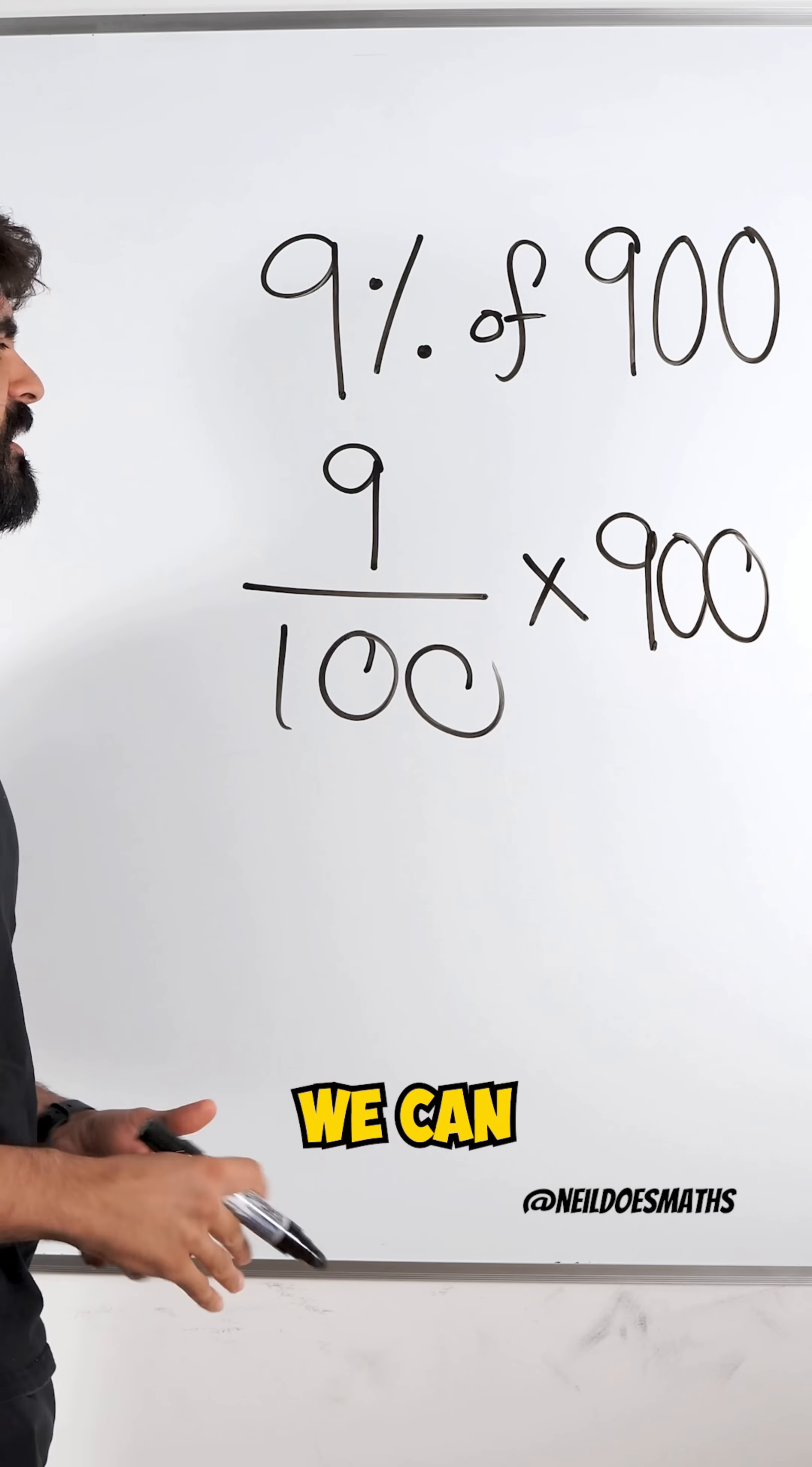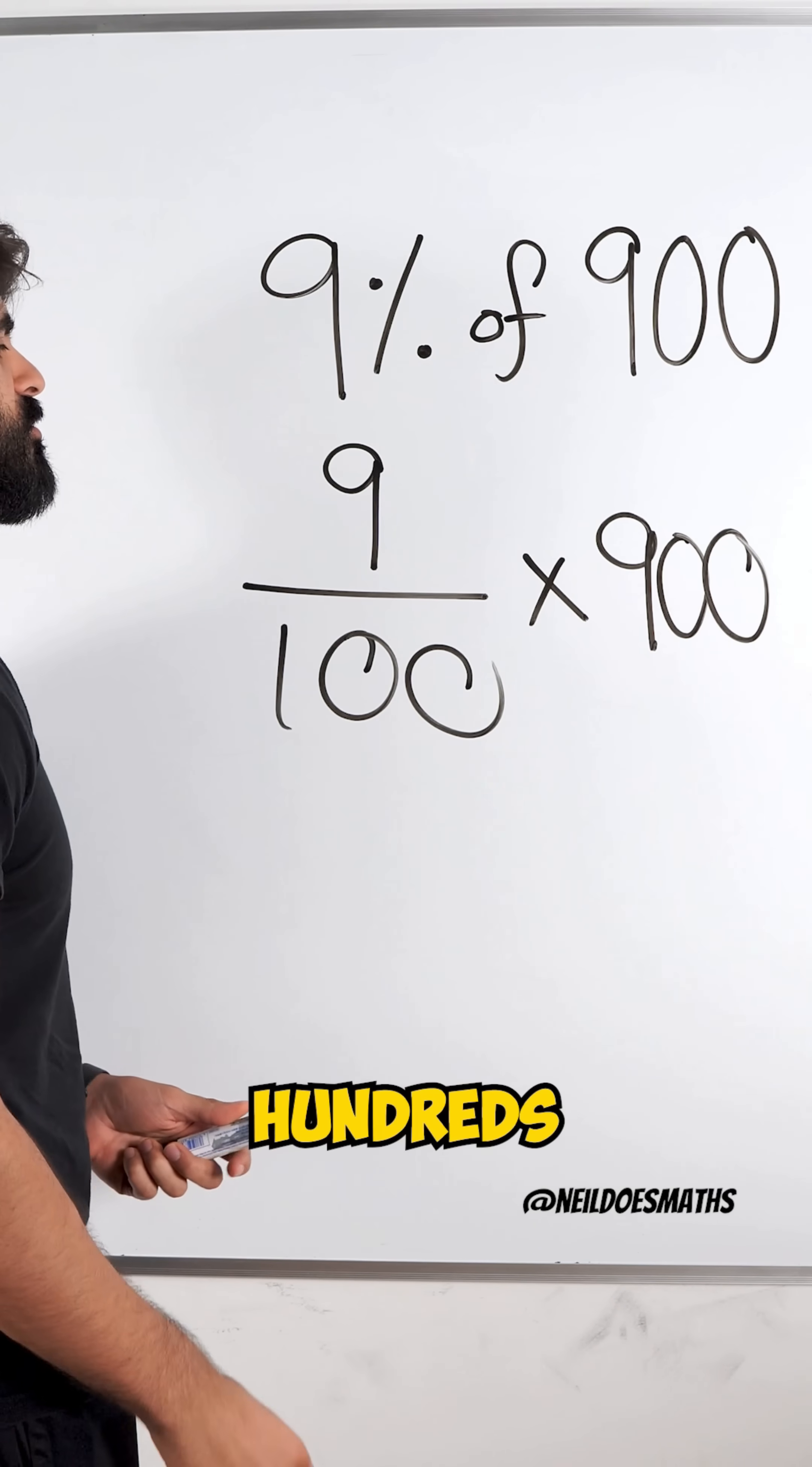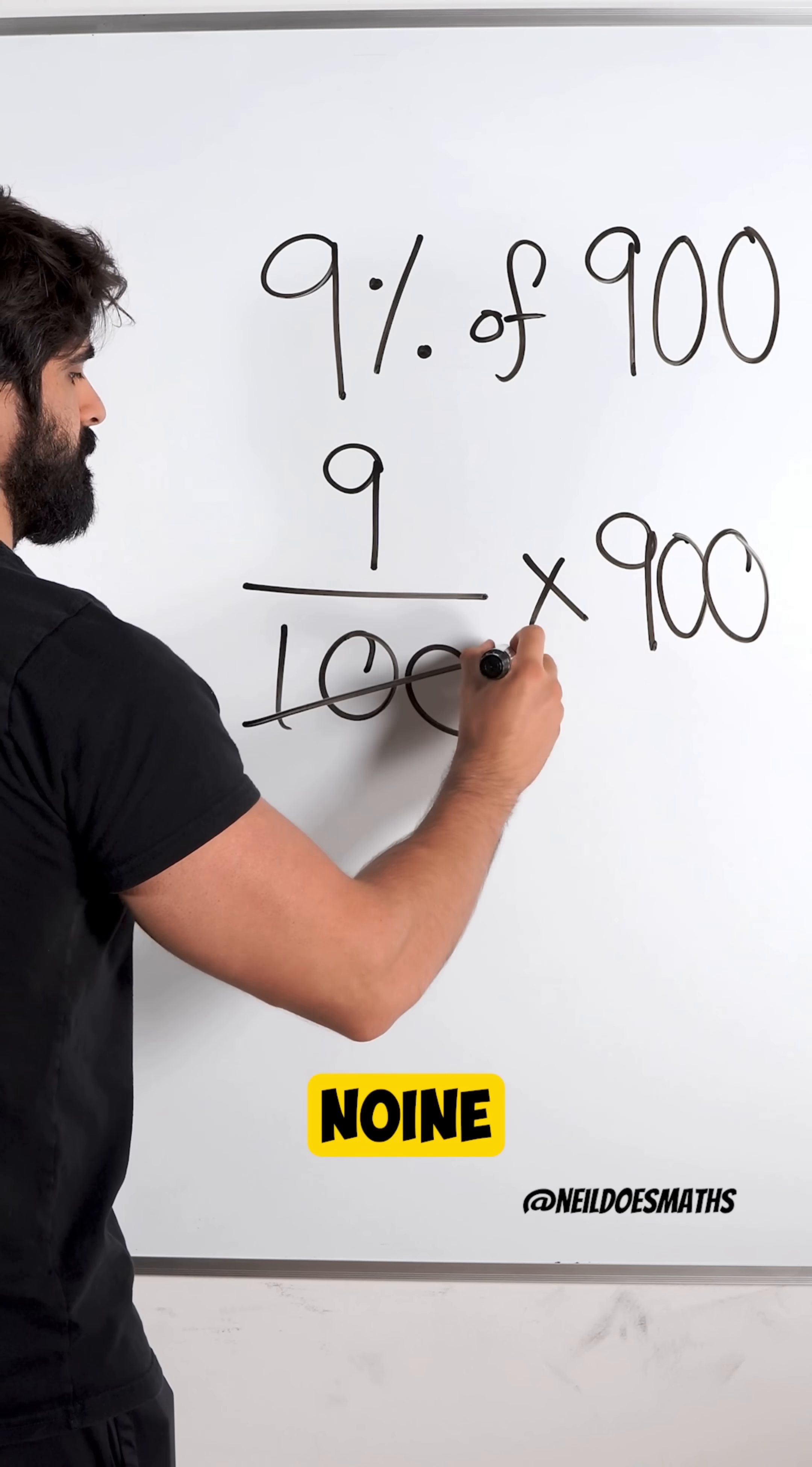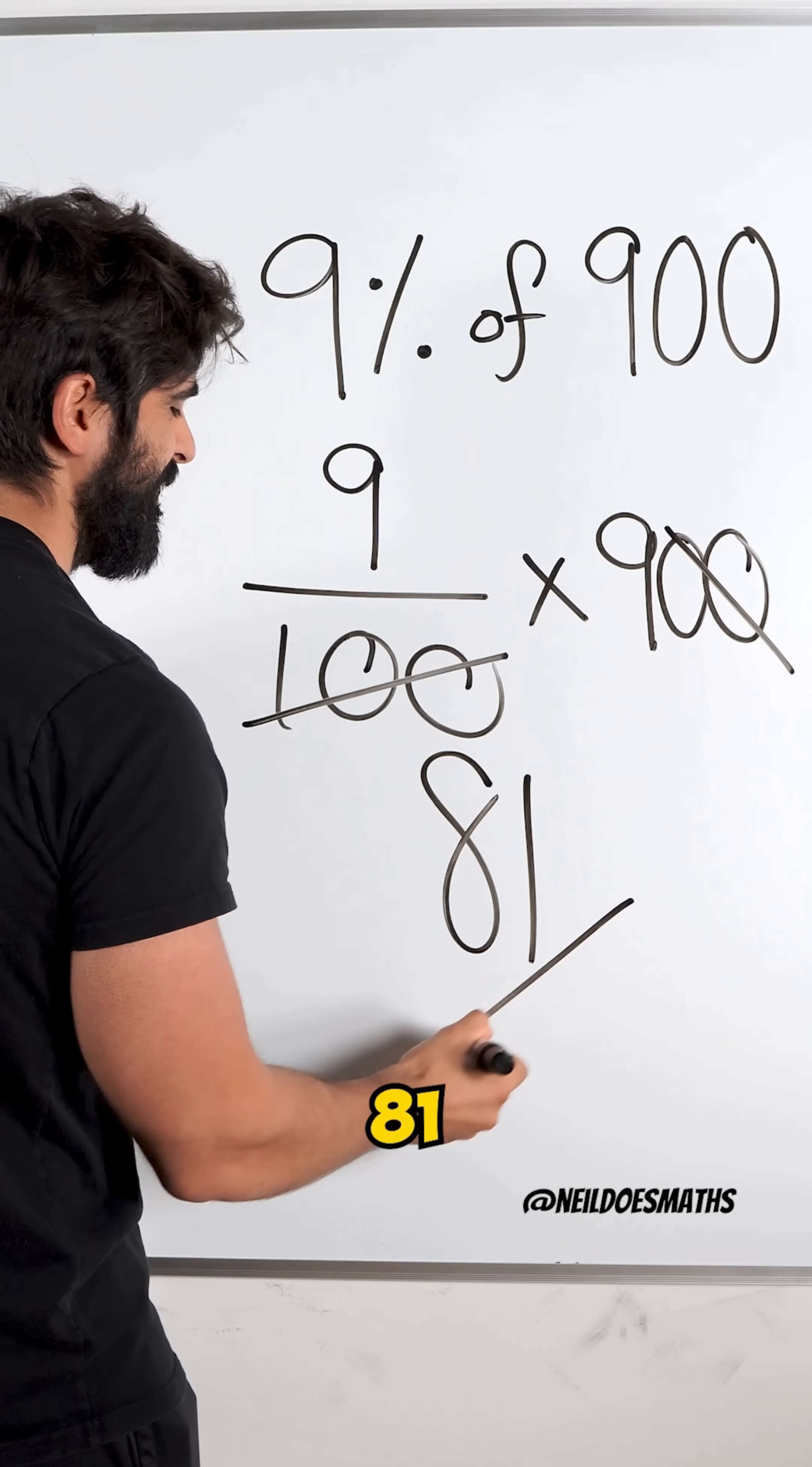There's different ways we can calculate this. We could do nine times nine hundred, or we can say how many hundreds go into nine hundred because it's a division. This divided by this is nine. So the hundreds cancel, and then we have nine times nine, which is eighty one.